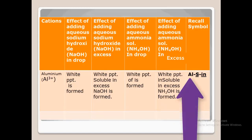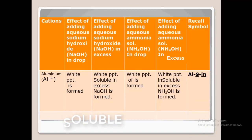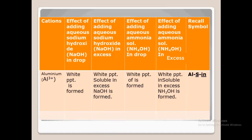The memory recall tip for aluminium is ALSIN. AL stands for aluminium, the first S stands for soluble in excess of sodium hydroxide, and IN stands for insoluble in excess of ammonia solution. If you can remember ALSIN, you already have a memory recall for aluminium: white precipitate, soluble in excess sodium hydroxide, and insoluble in excess ammonia solution.